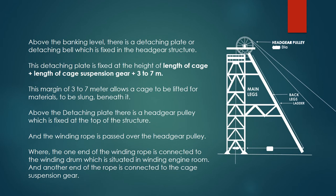Above the banking level, there is a detaching plate or detaching bell, which is fixed in the headgear structure. This detaching plate is fixed at the height of the length of cage, plus length of cage suspension gear, plus 3 to 7 meters. This margin of 3 to 7 meters allows a cage to be lifted for materials to be slung beneath it.